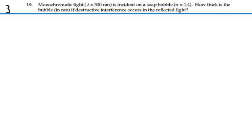Here's problem 3719. Monochromatic light with wavelength 500 nanometers is incident on a soap bubble of index of refraction 1.4. How thick is the bubble in nanometers if destructive interference occurs in the reflected light?